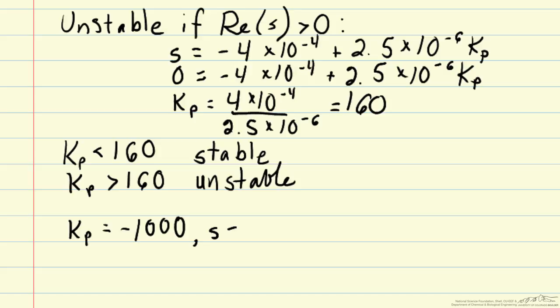We can calculate the value of s in our characteristic equation if we have a proportionality constant of negative 1,000. We can see here that with a proportionality constant in our controller of negative 1,000, we have a value of s in our characteristic equation that is negative, so the system should be stable.